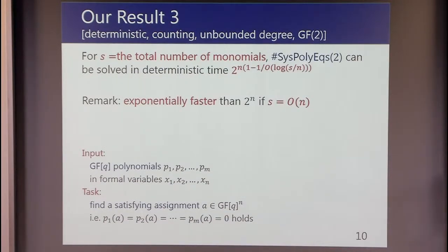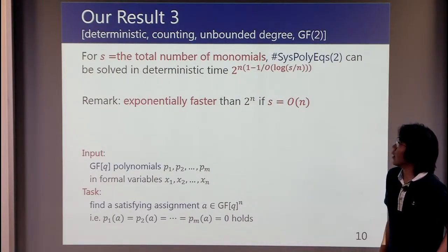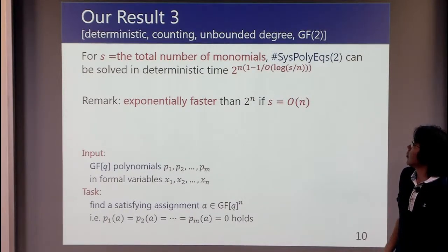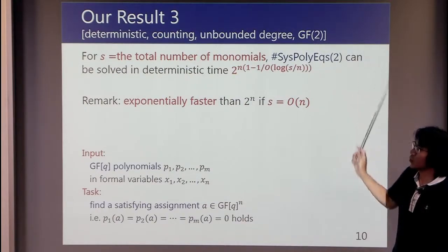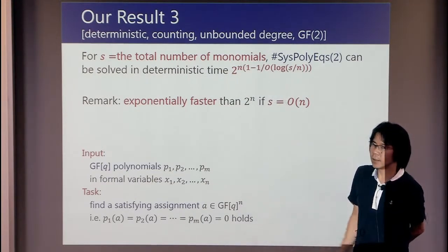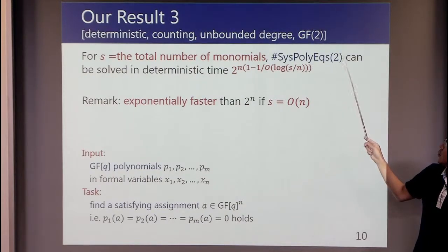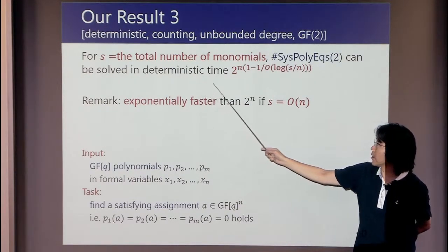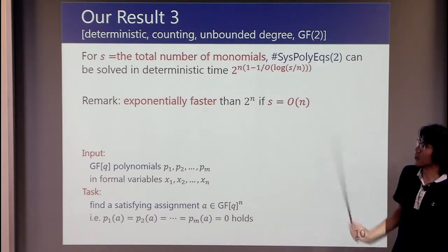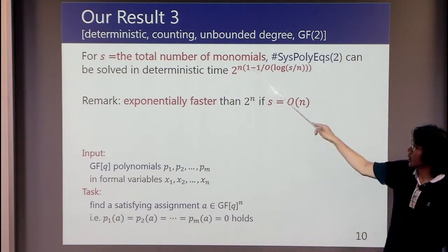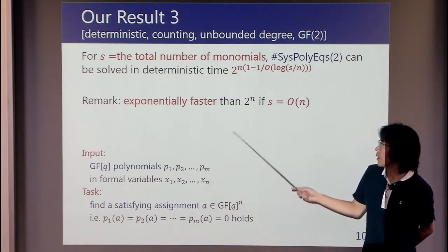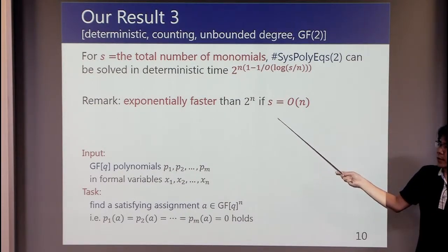This is our third result. Here we consider unbounded degree polynomials, but we have to focus on GF[2]. Let S be the total number of monomials. Then #SysPolyEqs(q) can be solved in deterministic time 2^(n(1-1/O(log(S/n)))). This running time is exponentially faster than 2^n if S is O(n).